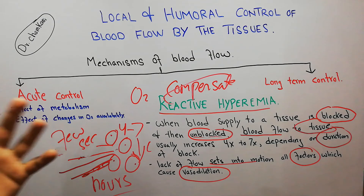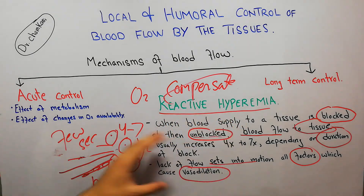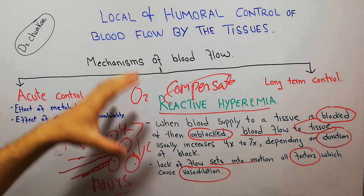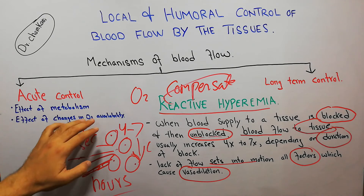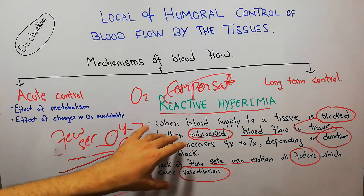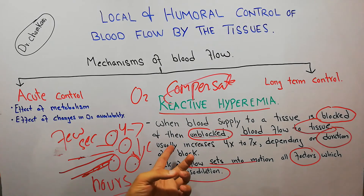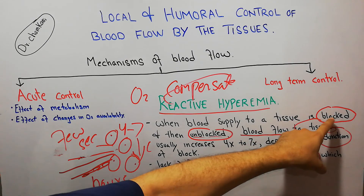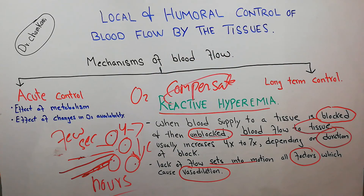The purpose of this mechanism is to quickly overcome the decrease in nutrient supply, decrease in metabolism, or decrease in oxygen availability of the tissue. That's all about reactive hyperemia, which is basically increased blood flow after removal of a block that has decreased the blood flow. Thanks a lot for watching the video.